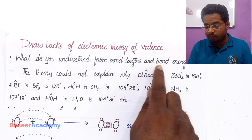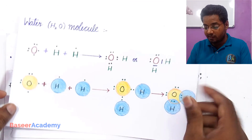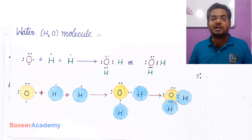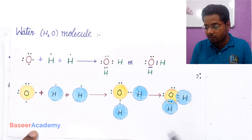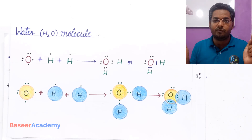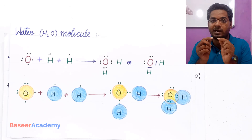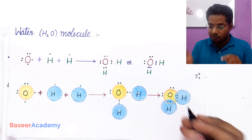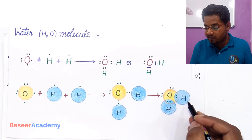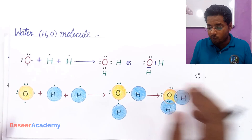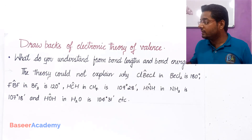So the first drawback is that electronic theory of valence failed to explain why bond length and bond energies are different when the atoms involved in covalent bonding are different. The charge of an electron is negative, and the electron of oxygen is no different from the electron of hydrogen. A covalent bond is formed by sharing two identical electrons, so if the electrons being shared are the same, why are the bond length and bond energy different?